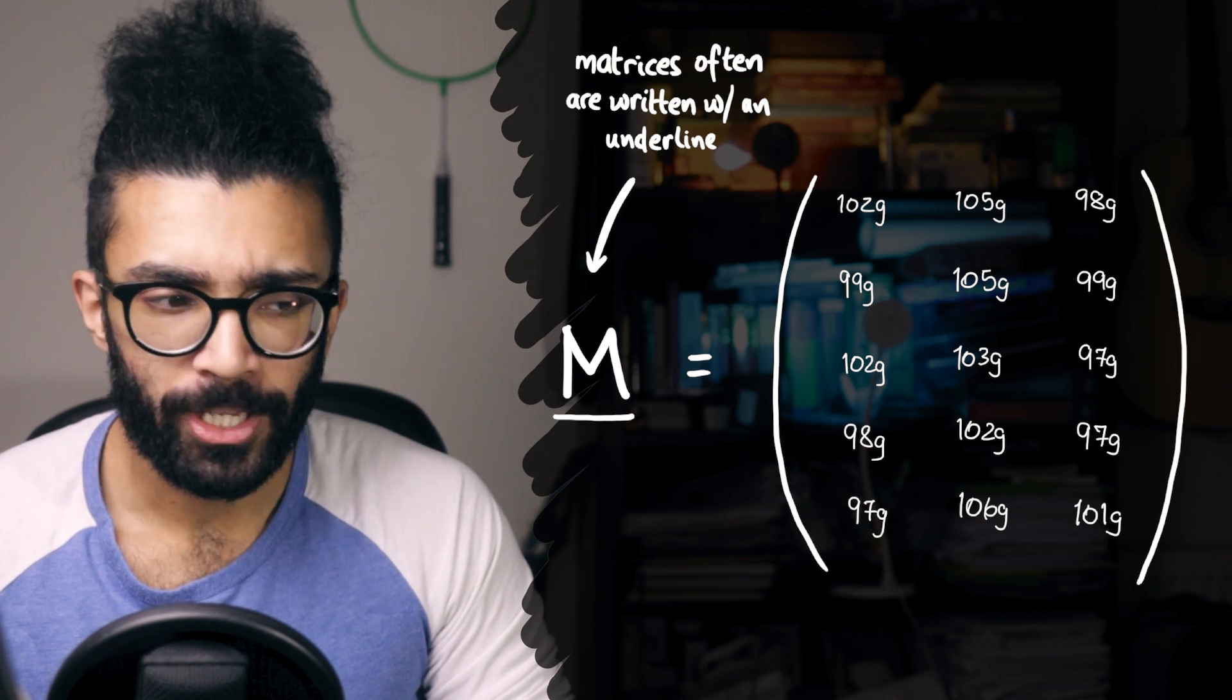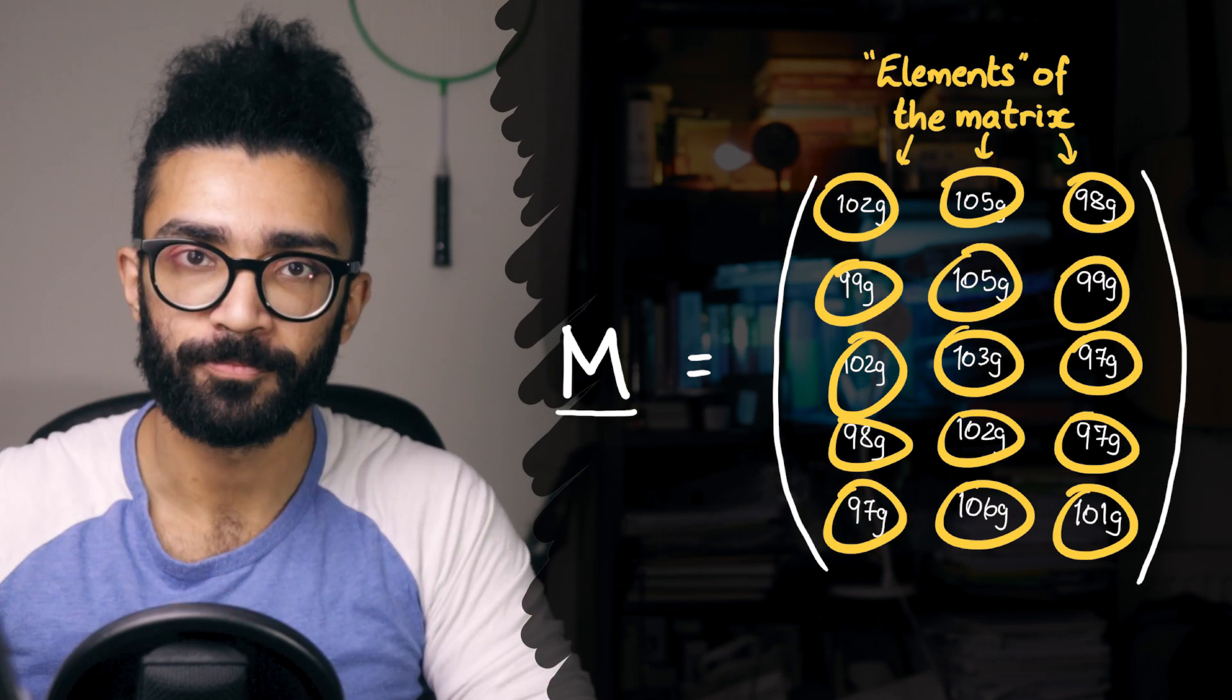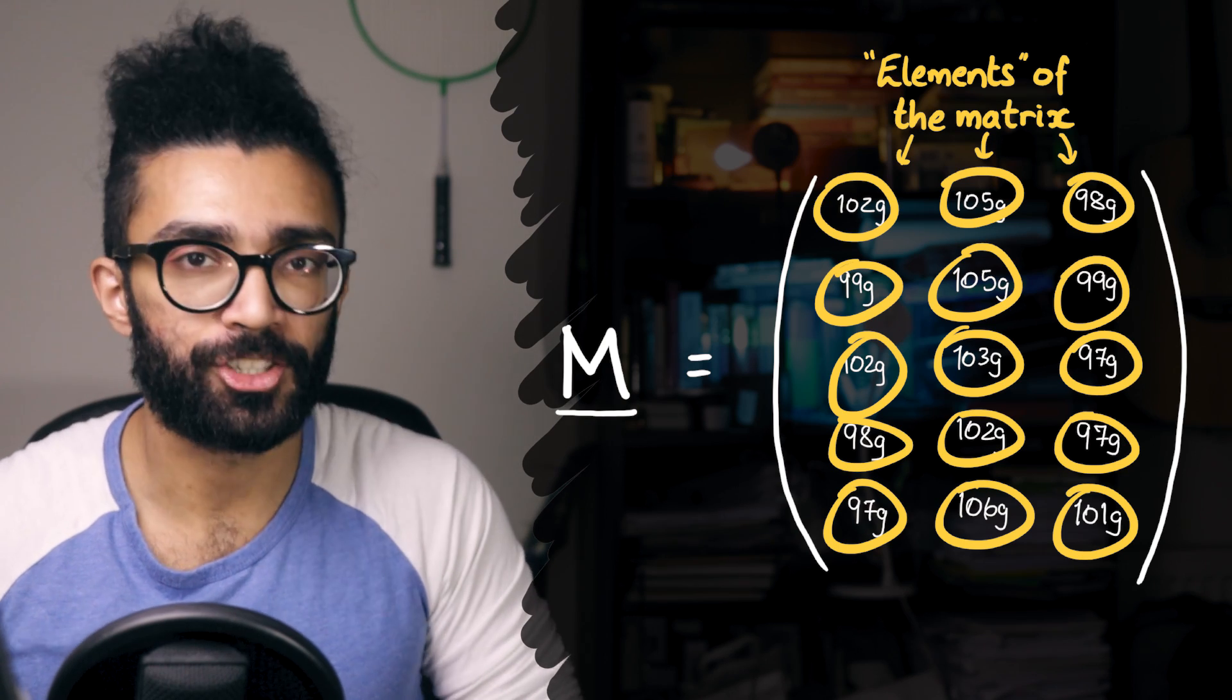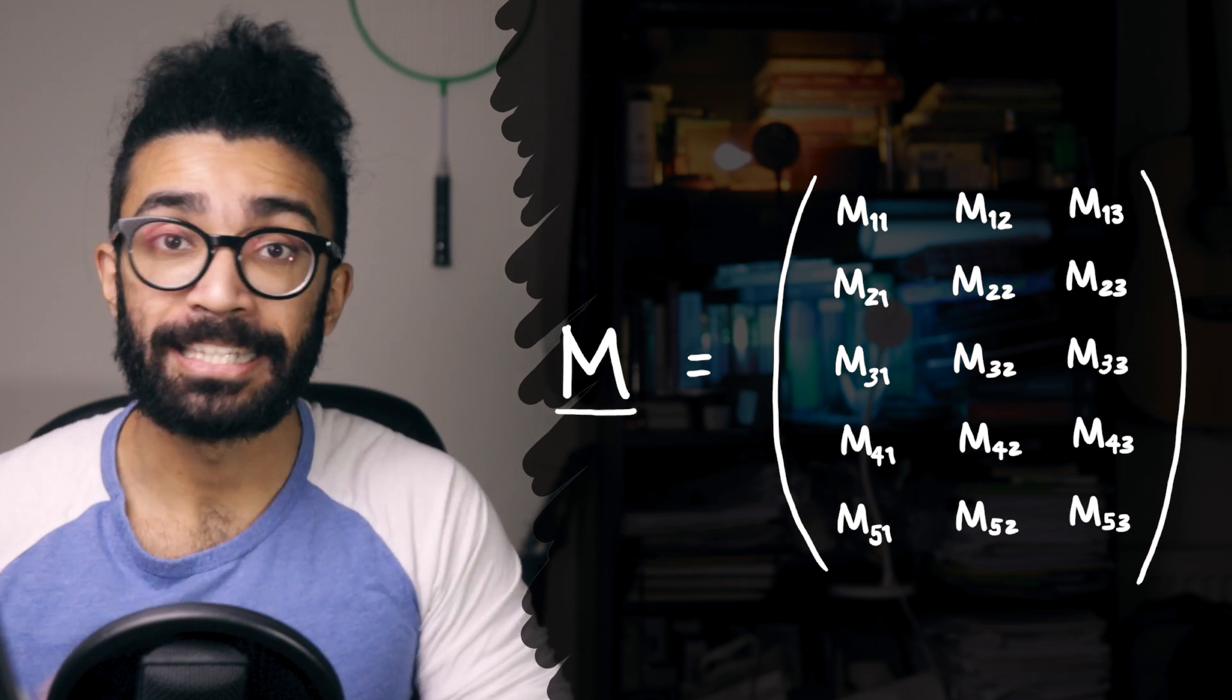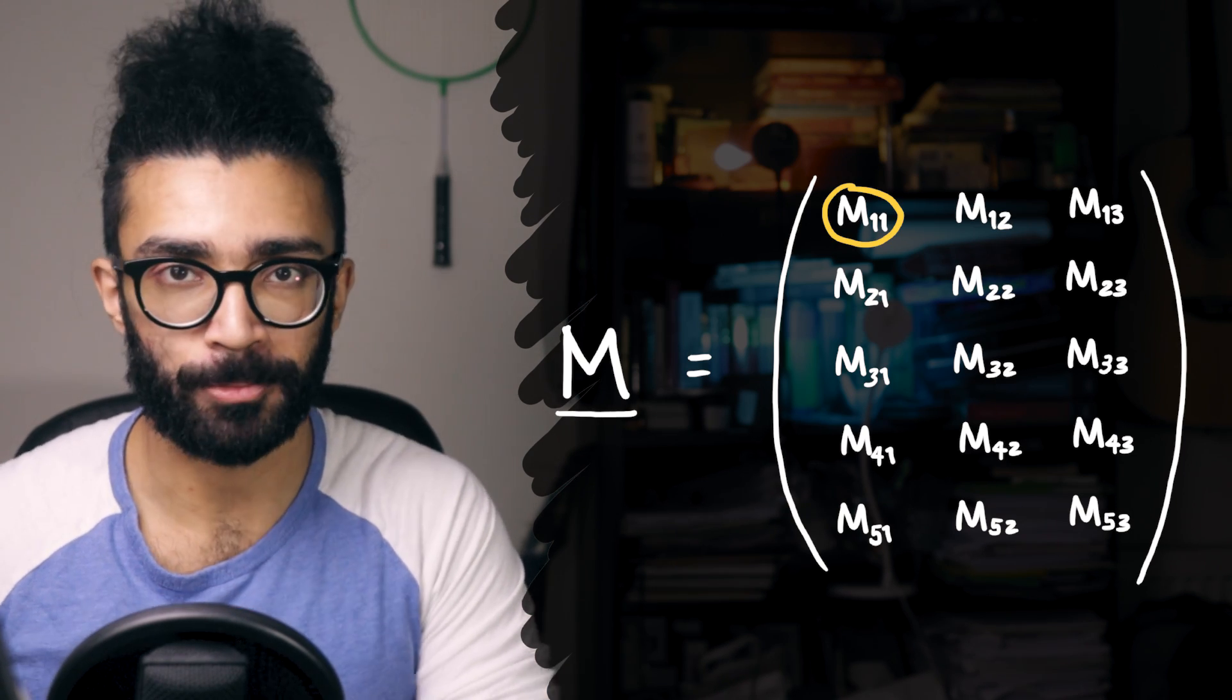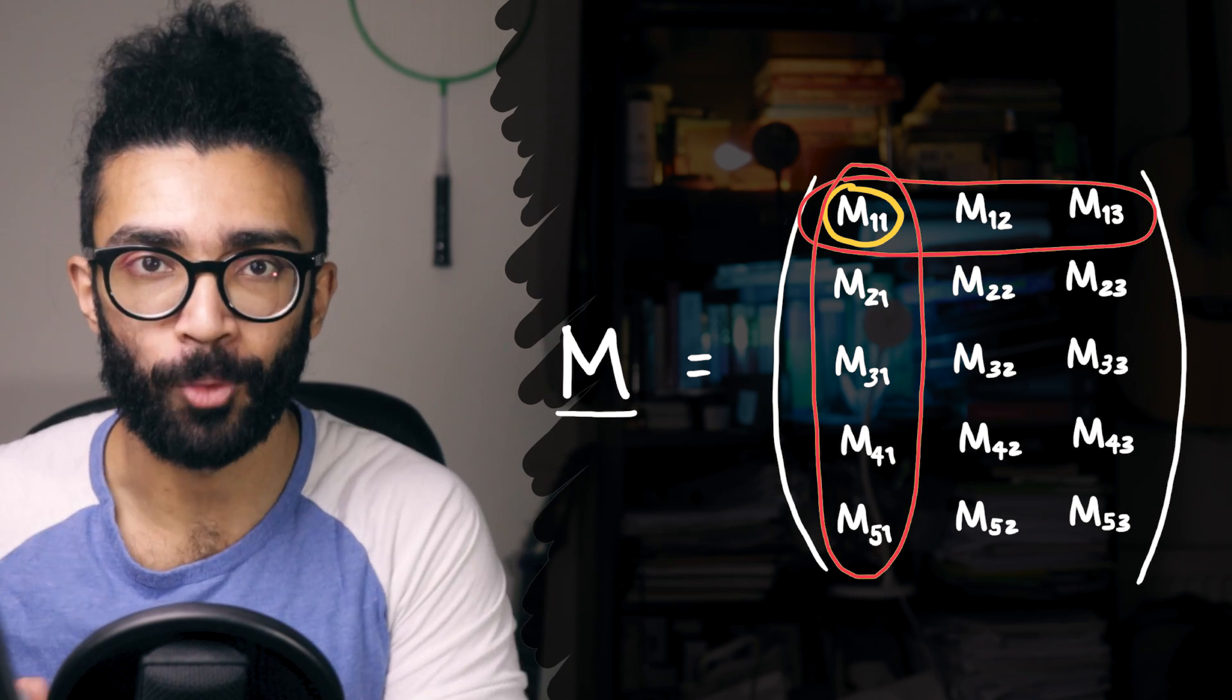Well, speaking generally, we can represent a matrix like this using just the matrix elements. Each little piece of information in this matrix is known as a matrix element. And if we had a generic matrix M, we could represent it like this. The element in the very top left position can be represented by M subscript one, one, because it's the element of matrix M that's found in row one, column one.